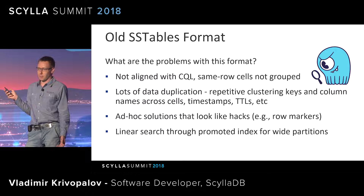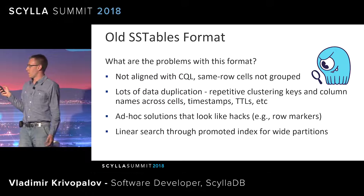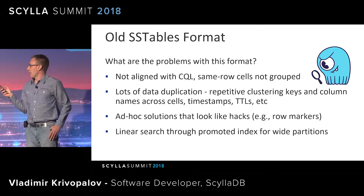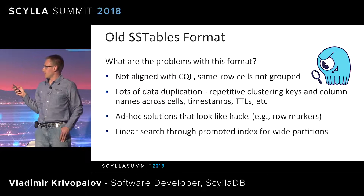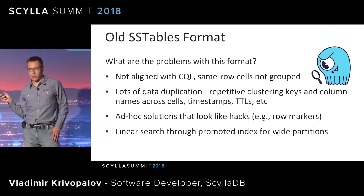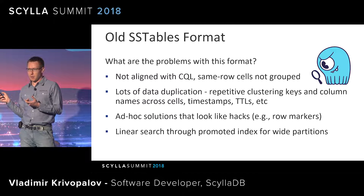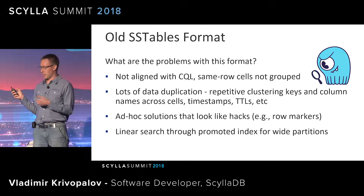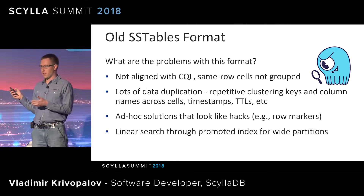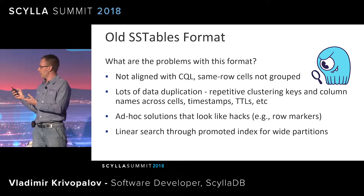So what are the problems with this format? We only introduce something new if something no longer satisfies our requirements. First of all, it is not aligned well with CQL. Same-row cells are not grouped. If we read from a data file and need a particular row in a partition, we still have to read more than that — we accumulate cells until we reach the end of the row, which we only detect when we hit the end of the partition or a cell belonging to the next row.